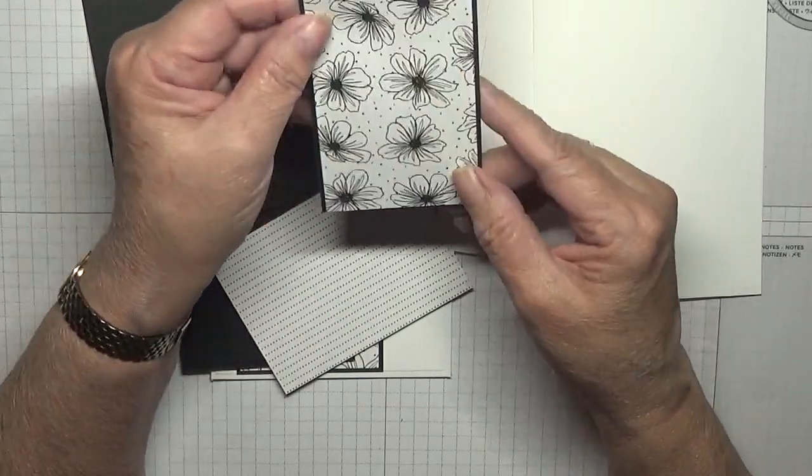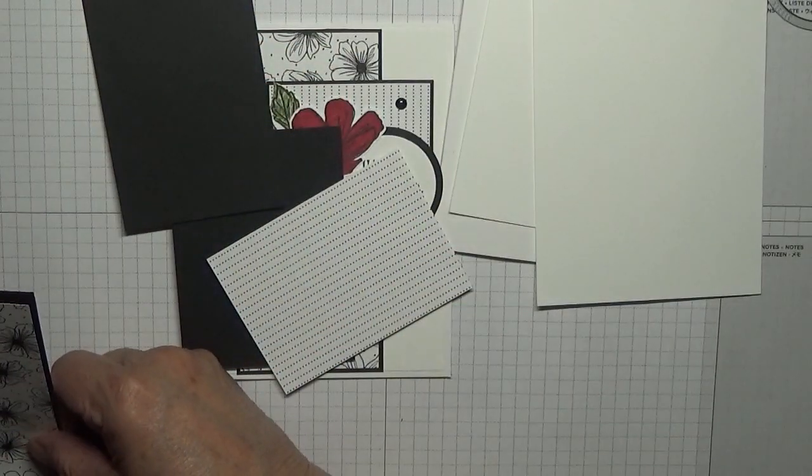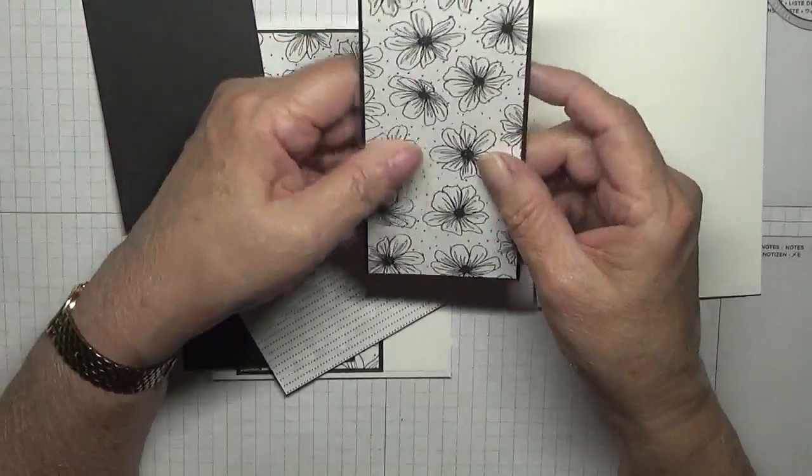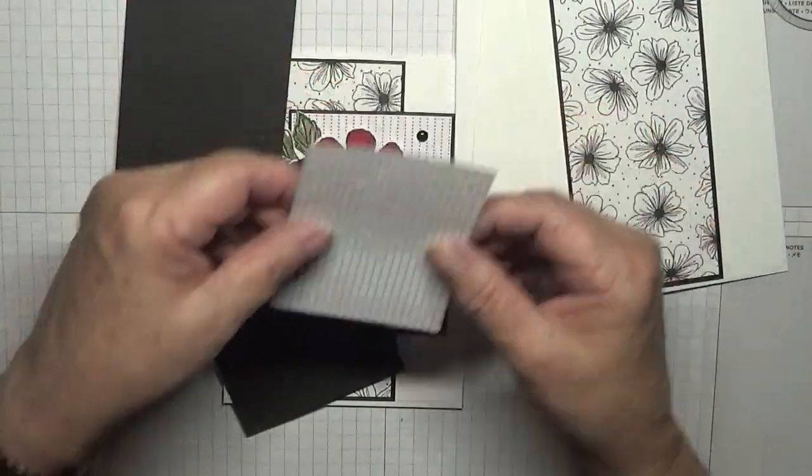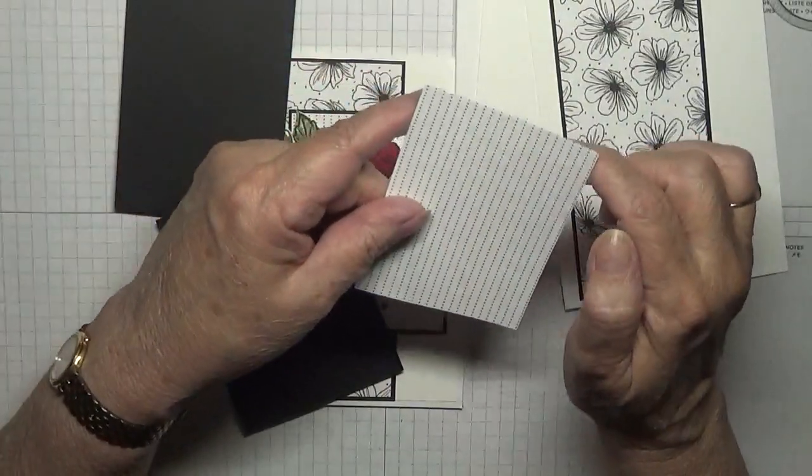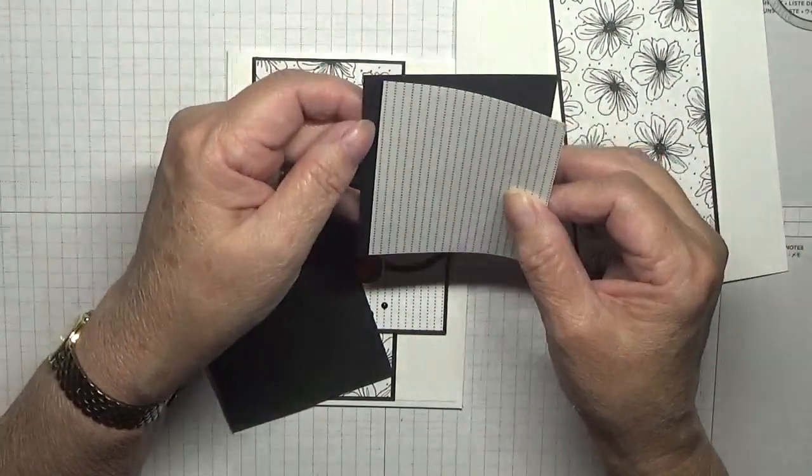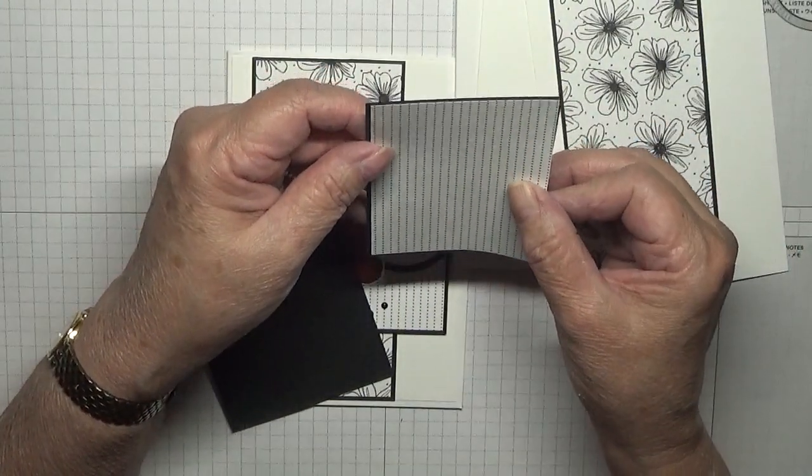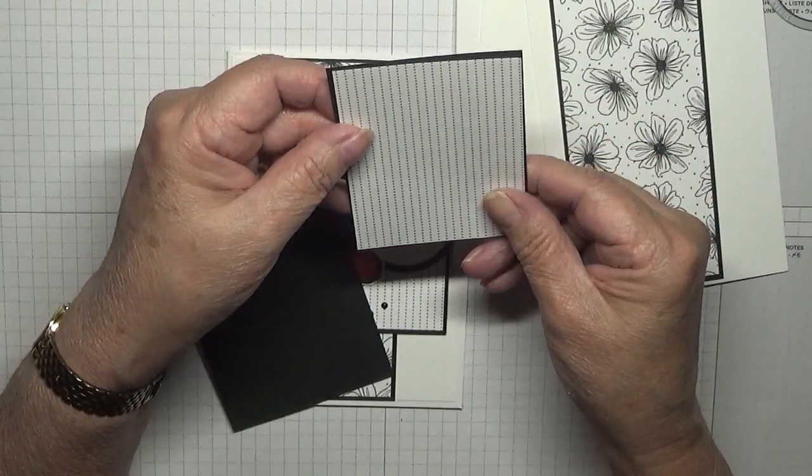I also have this which is 2 and five-eighths by 3 and five-eighths, so that will be 2 and three-quarters by 3 and three-quarters black mat.